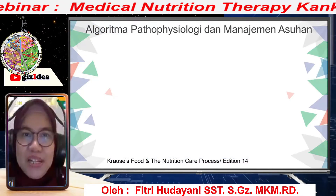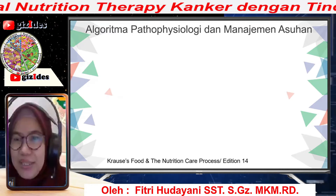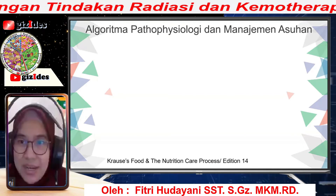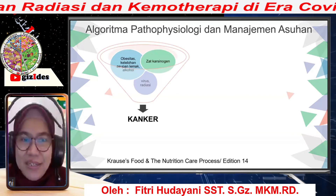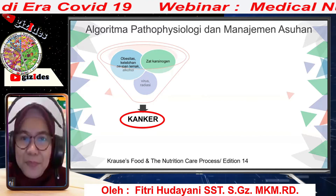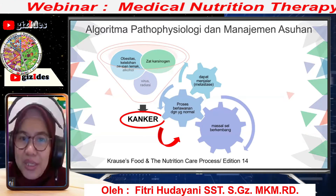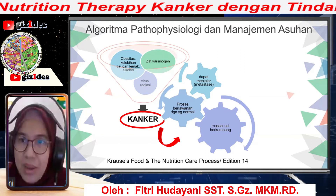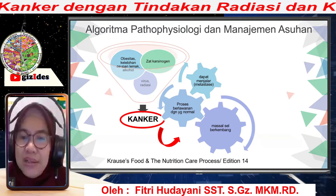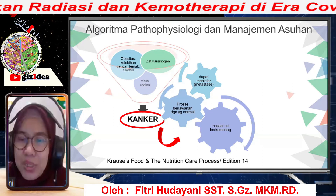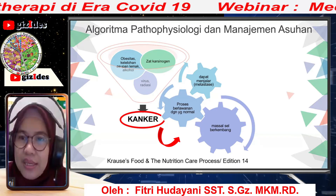Saya mau memulai dari algoritma. Sebenarnya kalau patofisiologi tadi dokter B sudah sangat jelas, tapi setidaknya saya mau menegaskan lagi benang merahnya. Penyebab kanker sudah dijelaskan, terjadinya kanker, dan yang sering kita temui kanker itu menjalar, kemudian adanya proses yang berlawanan dengan kondisi normal di dalam tubuh, adanya masa sel yang berkembang, dan seringkali sudah dengan metastase yang menyebabkan gangguan gizi yang lebih kompleks.